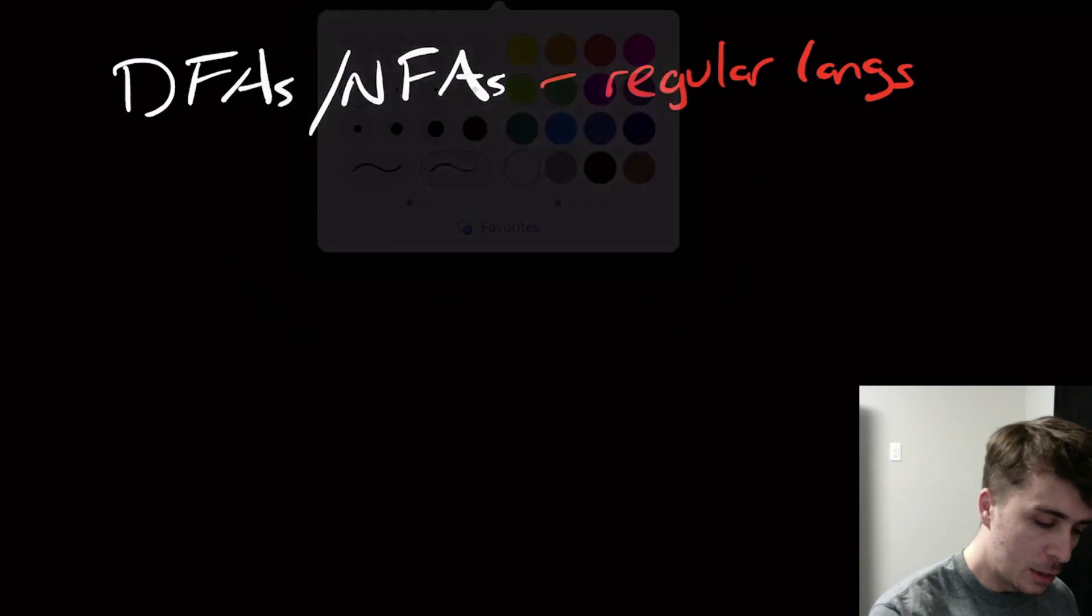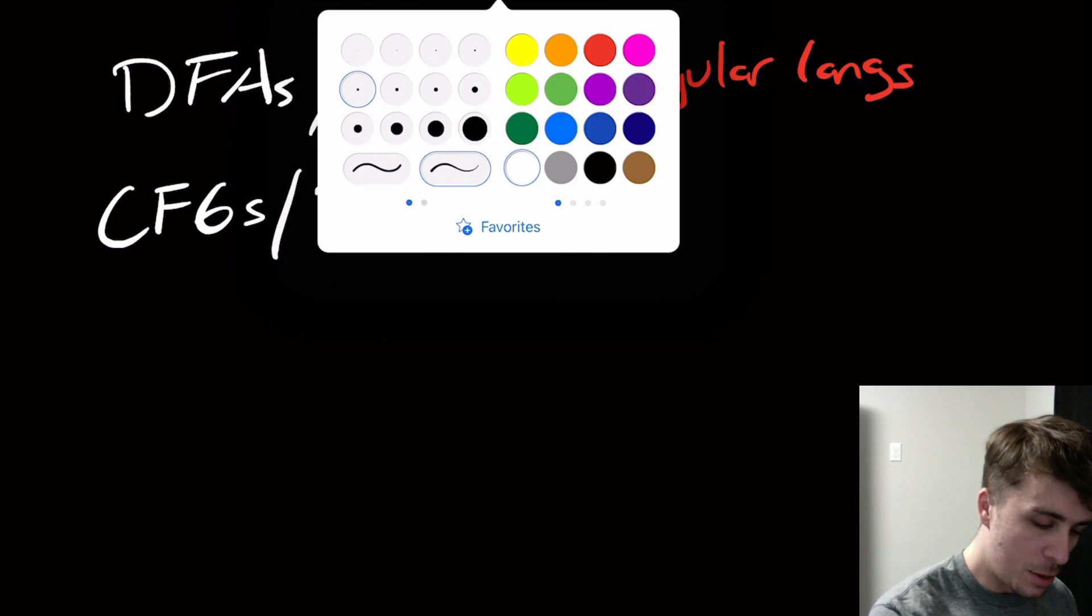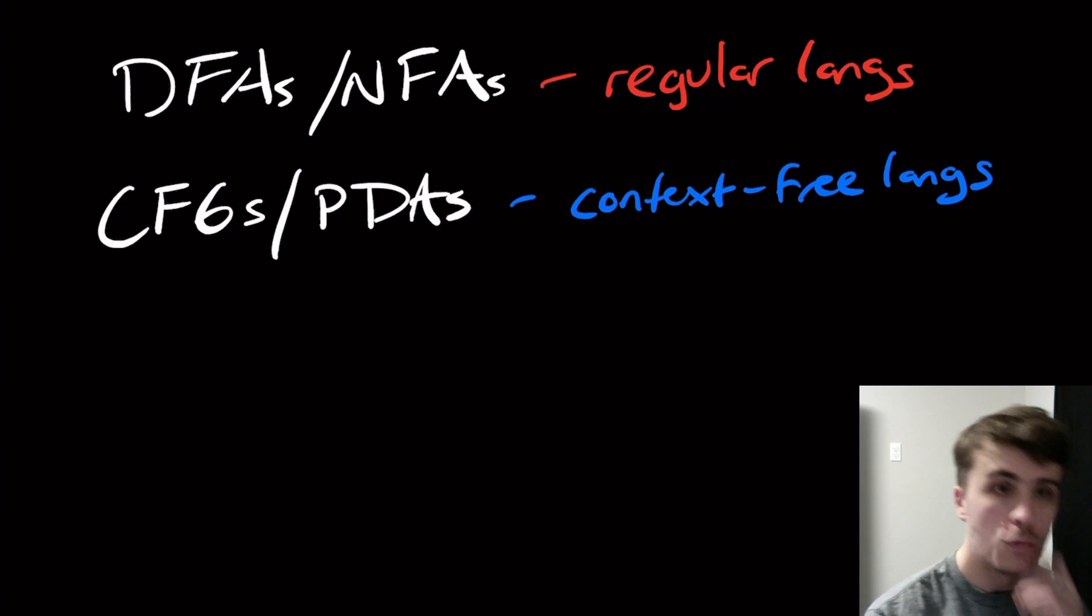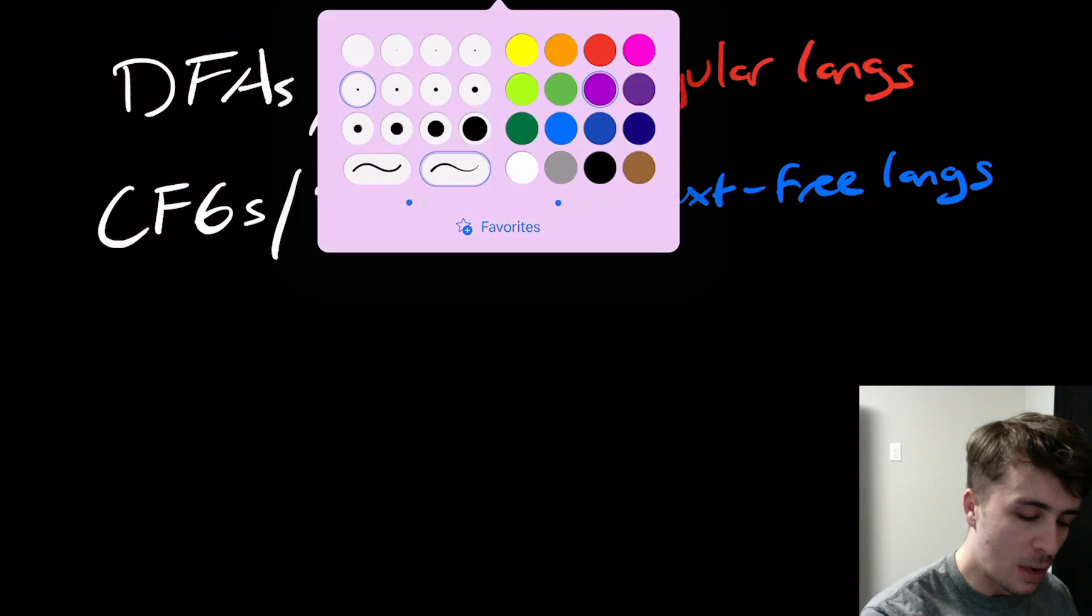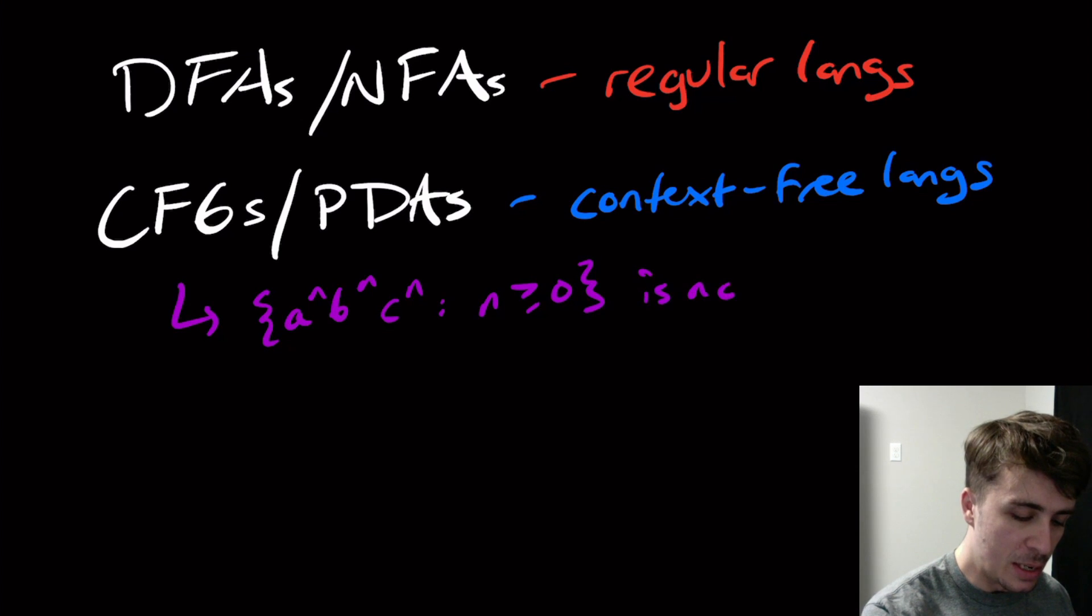Then we started to talk about CFGs and PDAs, and those are the context-free languages. We saw some languages that weren't even context-free. For example, A to the N, B to the N, C to the N, with N at least zero, is not a context-free language.